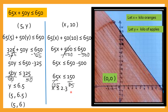So ibig sabihin, yun ang maximum na pwede mo bilhin. Ngayon, kung exact naman ang number na gusto mong bilhin — kung ilang kilo talaga ang bibili natin — ibig sabihin x is less than or equal to 2. Ano ibig sabihin yan? Pag ang gusto mong bilhin na kilos of apples ay 10 kilos, kaya mo lang bumili ng 2 kilos ng oranges lang.